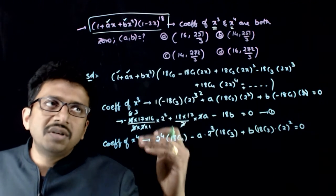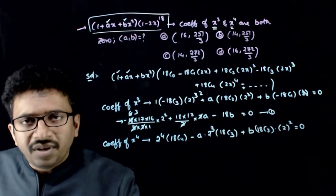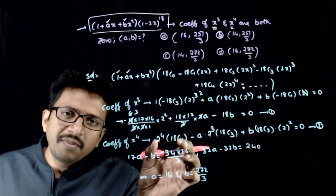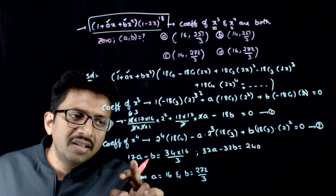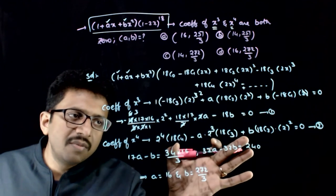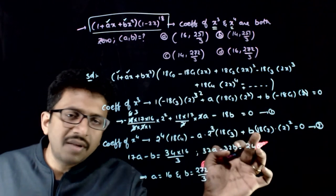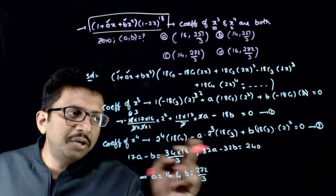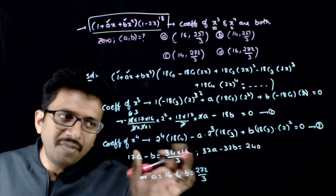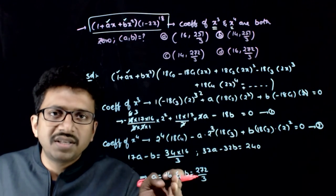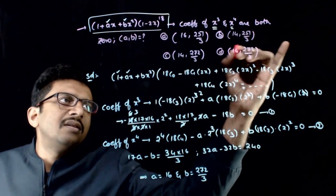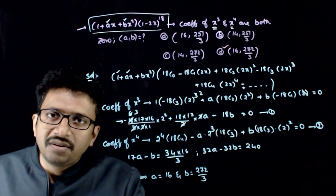You just need to solve these two equations to get the values of a and b. Simplifying the numbers: the first equation gives 17a − b = 34·16/3, and the second gives 32a − 32b = 240. Solving these linear equations gives a = 16 and b = 272/3. That is, option D is the right answer. Thank you.